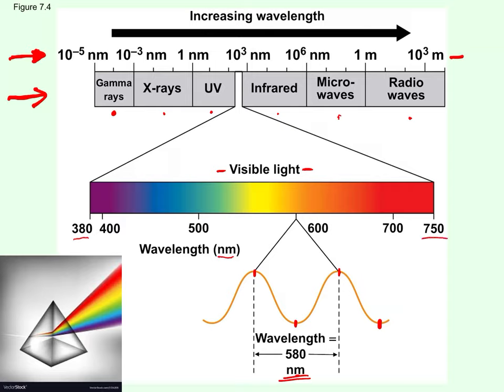Red has the longest wavelength in visible light. There is an energy associated with wavelength: the longer the wavelength, the lower the energy. Radio waves have very low energy — they travel through the atmosphere all around us and can't penetrate or harm our cells. On the other end of the spectrum, gamma rays have very short wavelengths and therefore very high energy. So shorter wavelengths mean higher energy; longer wavelengths mean lower energy.